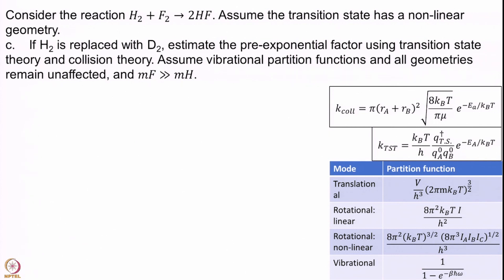The final problem is a hard one, but I want you to think about it. If H2 is replaced with D2, can you estimate the pre-exponential factor using transition state theory and collision theory? You can assume vibrational partition functions are independent of mass, geometries are independent of mass, and that the mass of fluorine is much greater than the mass of H. This is slightly open-ended without full information, and such a problem I would never give in an examination setting. Take a pause and attempt the problem on your own first.